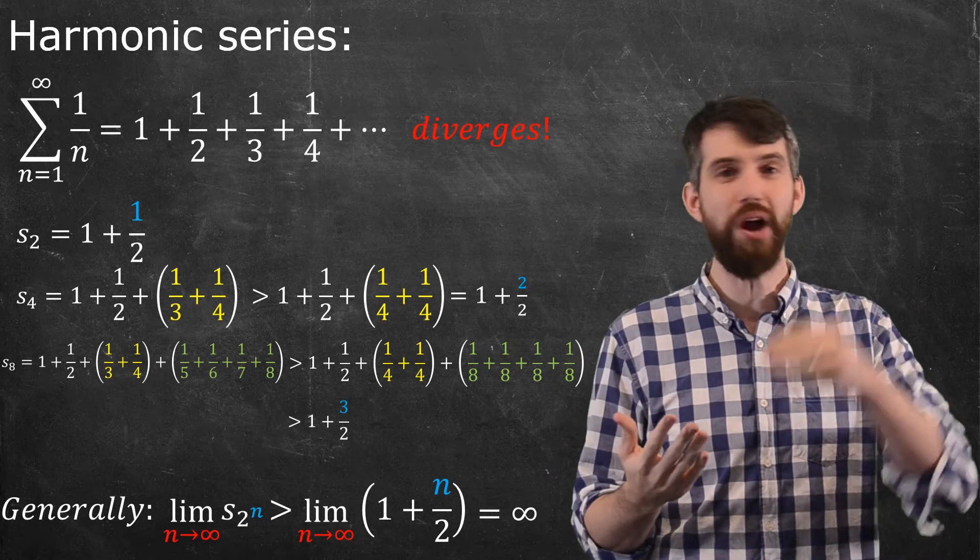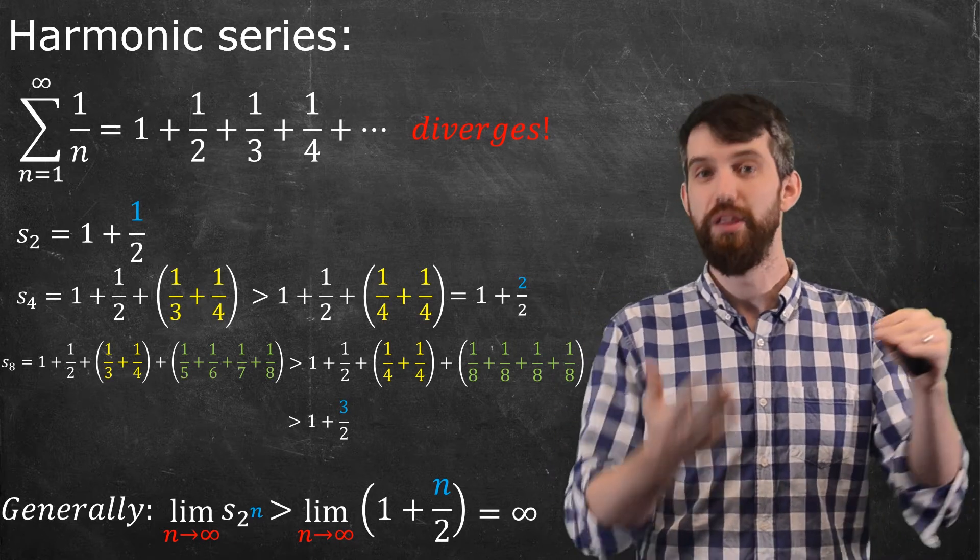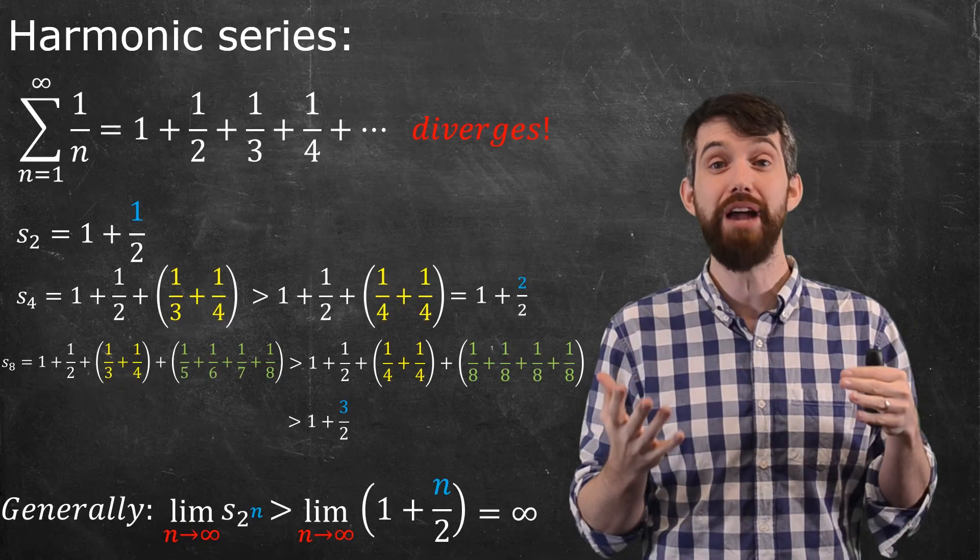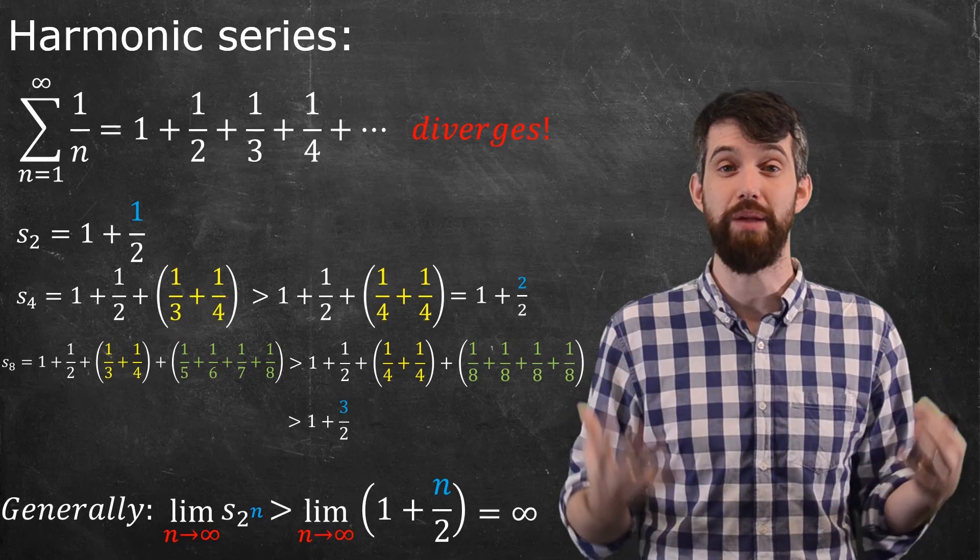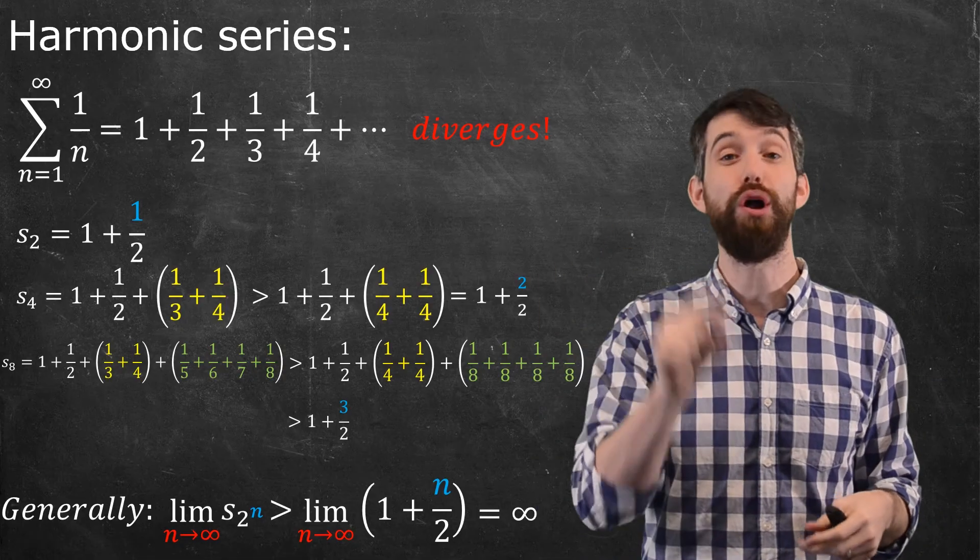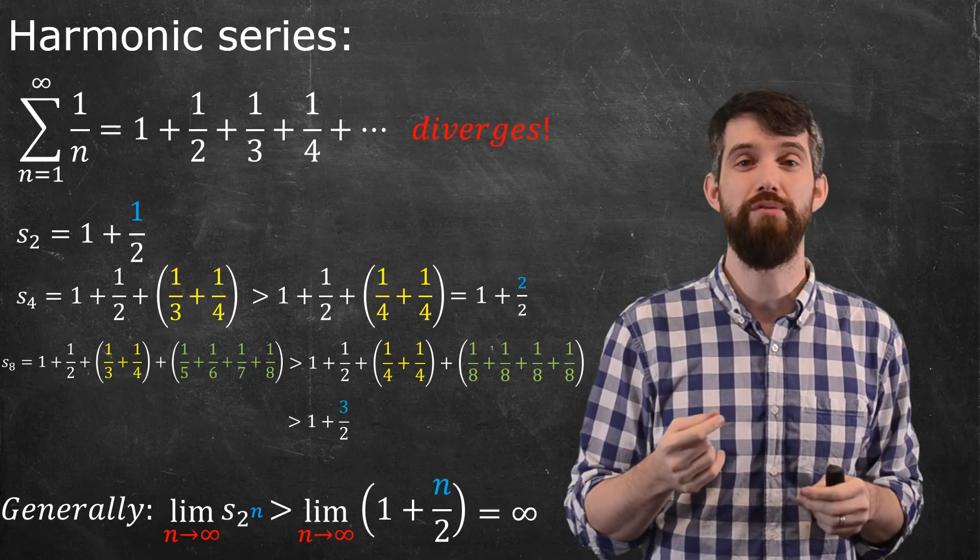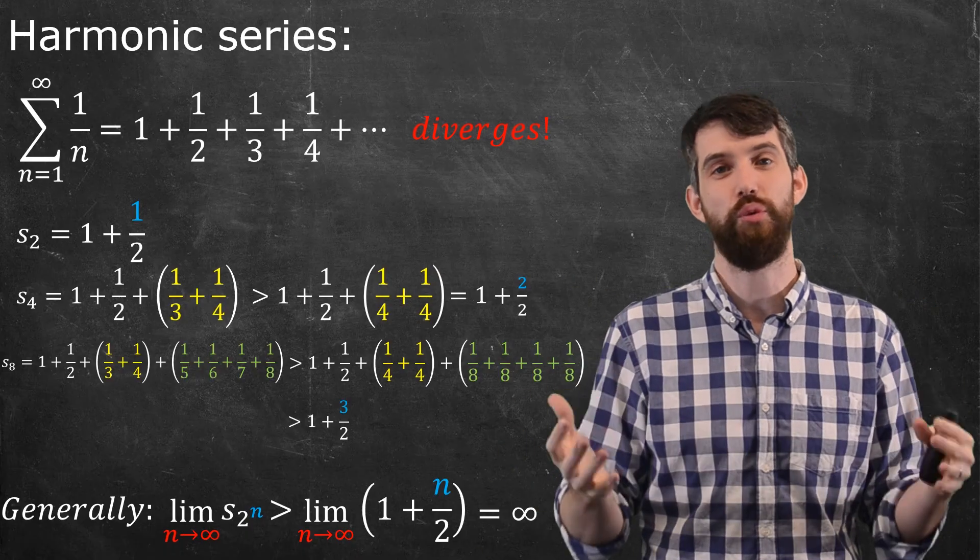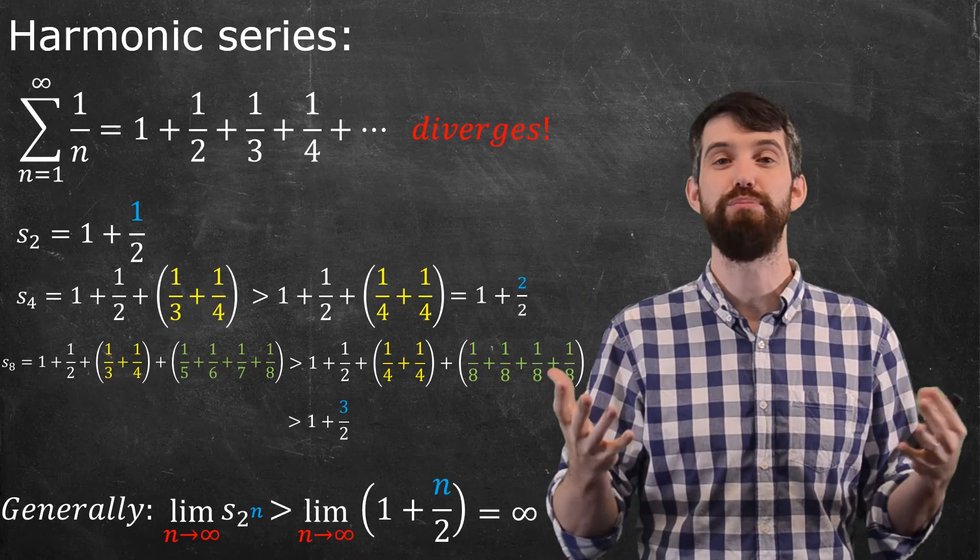You keep on adding these terms, it's not going to converge to a value like one, the way the geometric series did that we saw before with r equal to a half. It is going to diverge to infinity. It can be as large as you may please. But to be as large as you may please, even just 100, you will need this enormous number, 10 to the 43 terms to be able to do so, which is absolutely crazy.